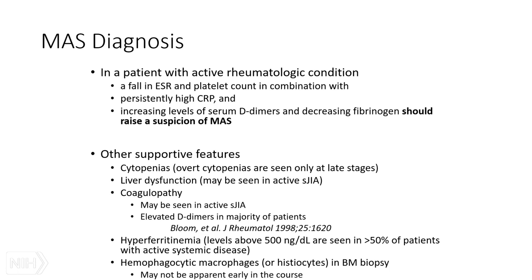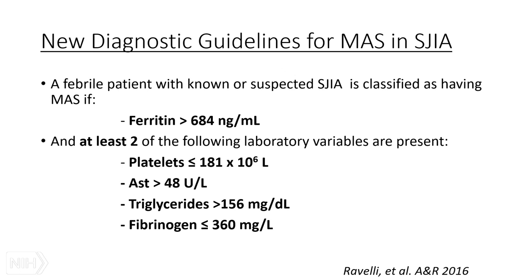Hyperferritinemia is a cardinal feature of MAS, with levels often exceeding thousands. In 2016, Angelo Ravelli led an effort to develop new classification criteria for MAS specifically in systemic juvenile idiopathic arthritis. These criteria are shown here, and we still need time to test them in real practice to truly assess their value.